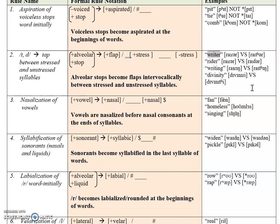Alveolar stops become flaps intervocalically between stressed and unstressed syllables. Take the word 'writer' — it has the pattern of being stressed at the beginning, 'wri-', and then unstressed in the second syllable, '-ter'. The /t/ is in the middle. From the previous rule it could be aspirated, but in natural speech you'd say 'writer' — in intervocalic position it's reduced. We use the symbol that looks like an 'r' without its arm, and if you pronounce 'writer' quickly, your tongue just barely flaps to the alveolar ridge.